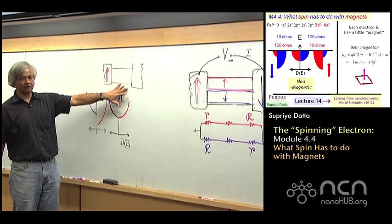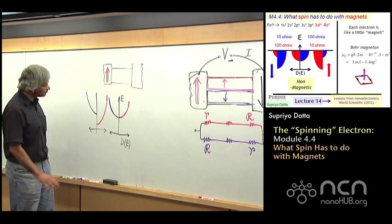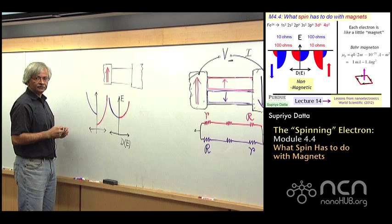Non-magnetic means both spins exactly the same. Whatever you have for one, you have for the other. Two identical things in parallel. But in the magnet, they are different.